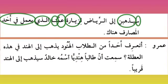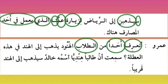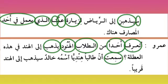Amrun again is desperate, asking: 'ta'rifu ahadan minat tullab al-hunud yadhhabuna ilal hind?' — do you know any of the Indian students who are going to India in these holidays? He continues: 'sami'tu' — this comes from 'sami'a' — I heard. 'Anna' — heard what — 'inna' comes at the beginning of a sentence but when it comes in the middle after a verb like 'sami'tu', it becomes 'anna' for emphasis — I heard that.